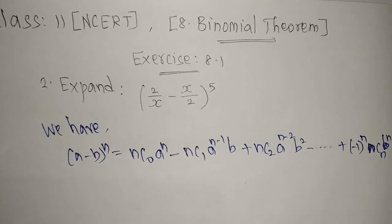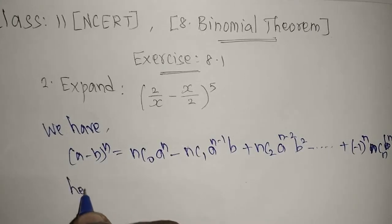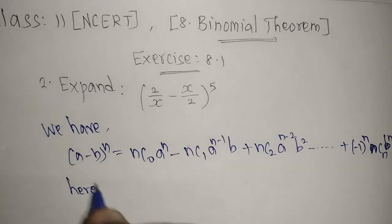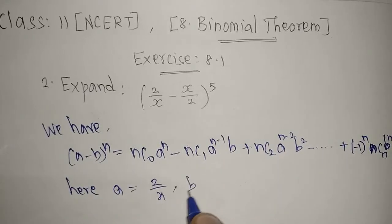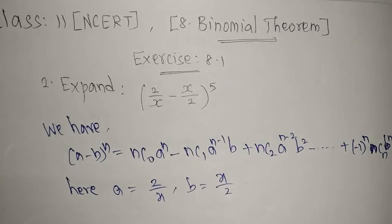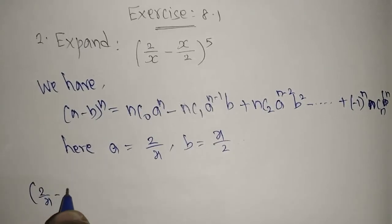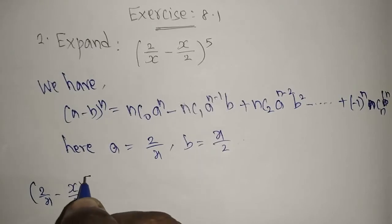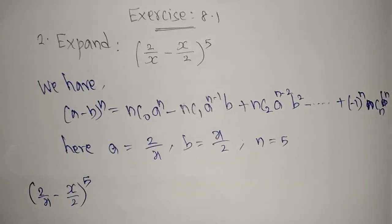Now we will start to substitute. Here the value of a is 2/x and b is x/2. The expression is (2/x - x/2)^n where n = 5.